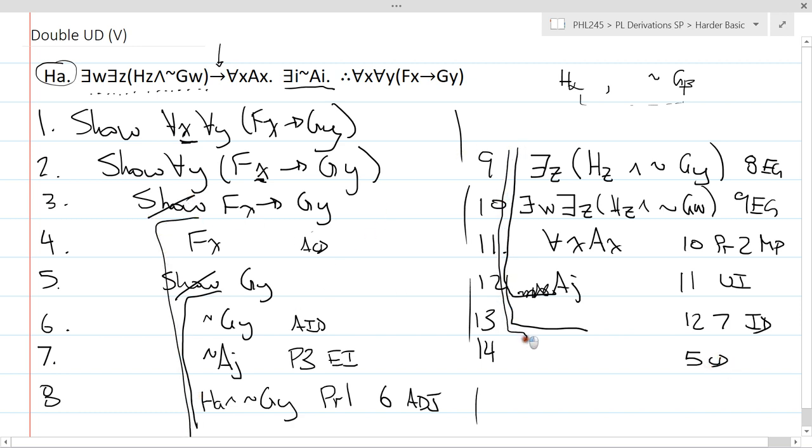At this point, I just need to close my remaining two show lines and they're both universal derivations. So I can close line two by pointing to the instantiation I got, which is three UD. Close. And on line 16, I do the same thing for my line one show line. I cite line two UD. And that's it.